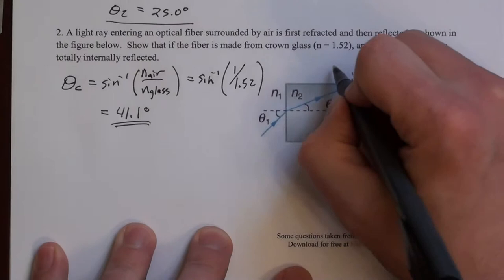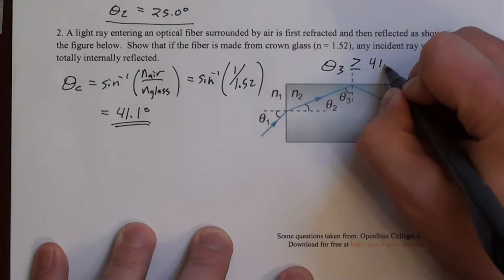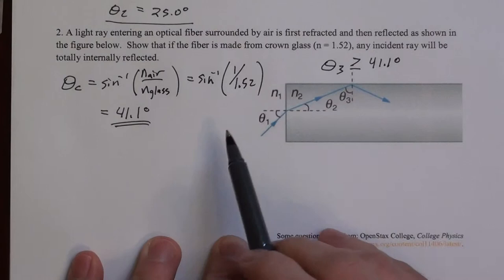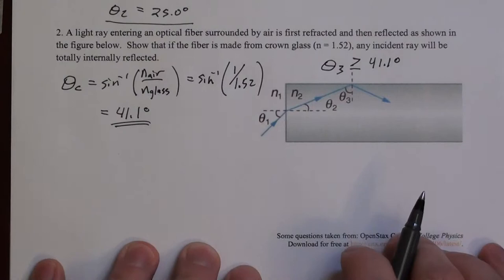So what we're saying here is we want theta 3 to be greater than or equal to 41.1 degrees, regardless of theta 1. Theta 3 is going to change, we just want to make sure that this is always the case.